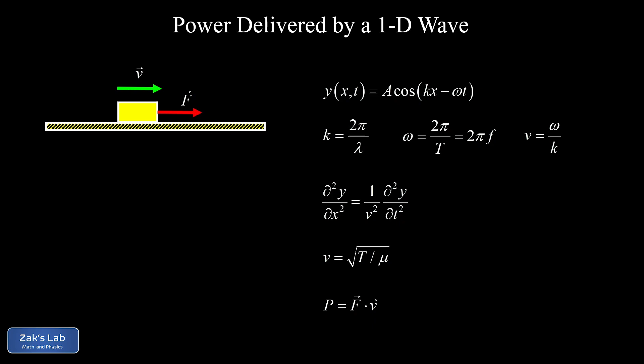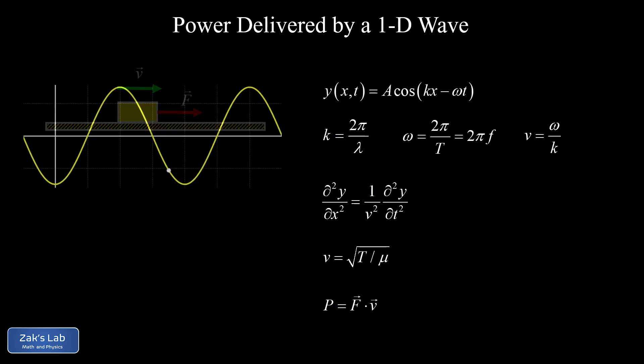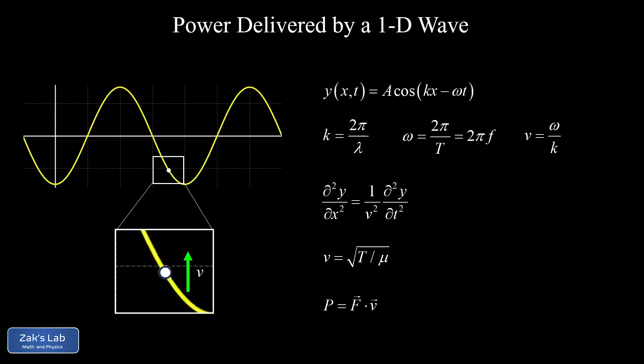Let's freeze the animation at some arbitrary moment in time and zoom in on a point of interest on the string — a little chunk of mass that happens to be moving upward. We're interested in the power delivered to this point as the wave arrives from the left. The force on this chunk from its left side is the tension T. This tension vector can be broken into x and y components: Ty and Tx.